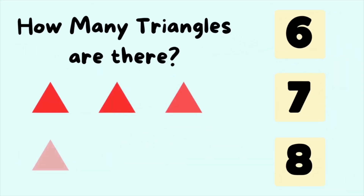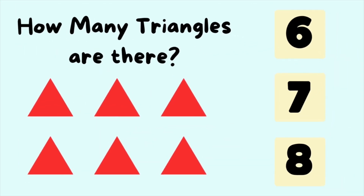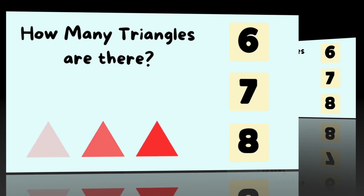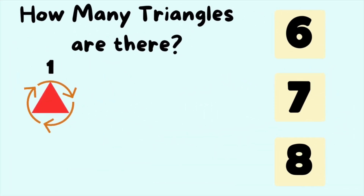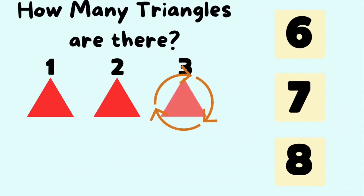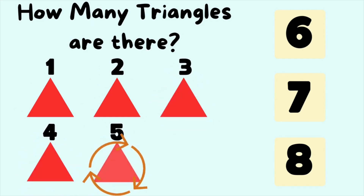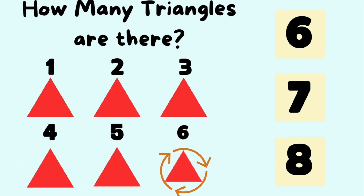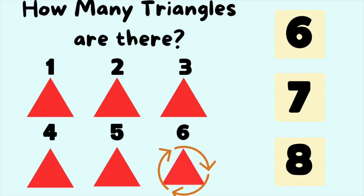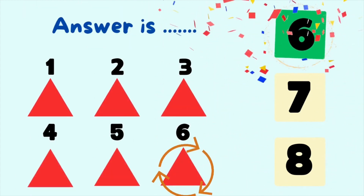How many triangles are there? Let's count the number of triangles. It is one, two, three, four, five, six triangles. So the answer is six triangles.